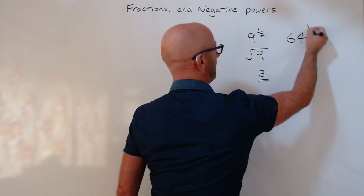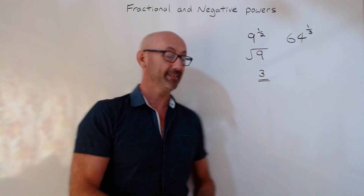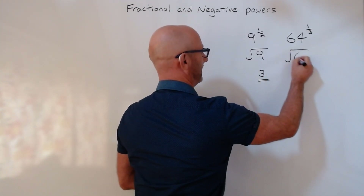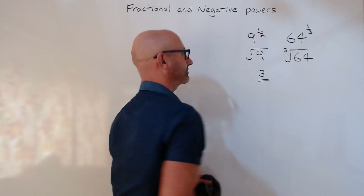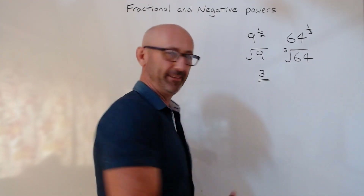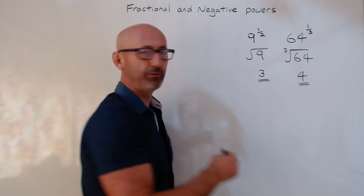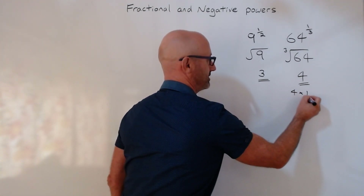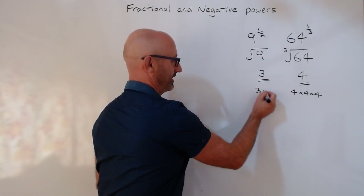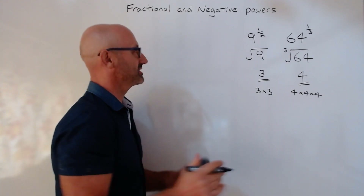64 to the power of a third is cube root. Well done — so if a half is square root, a third will be cube root. What is the cube root of 64? It's four — she hasn't rehearsed this honestly. It is four, and the reason it's four is because 4 times 4 times 4 is 64, just like 3 times 3 is 9.